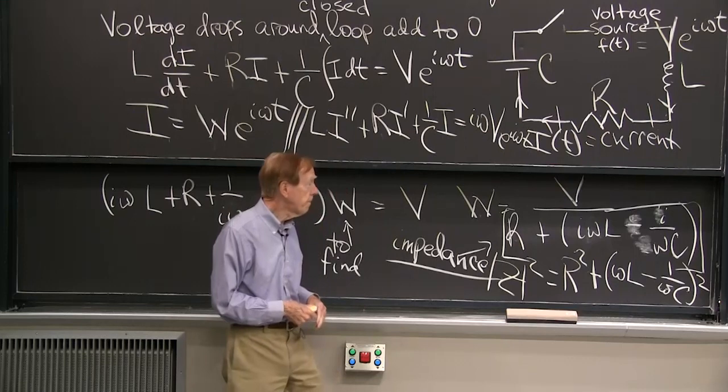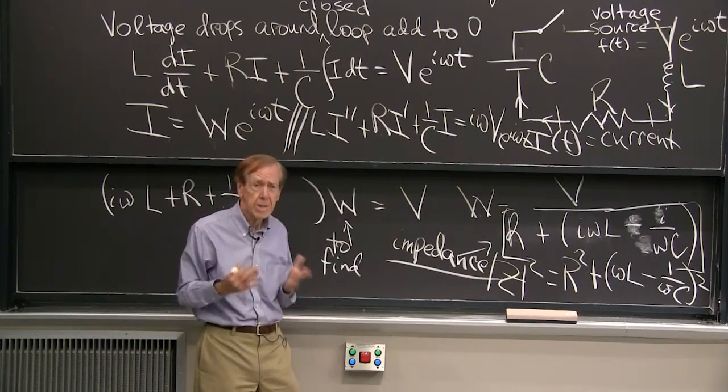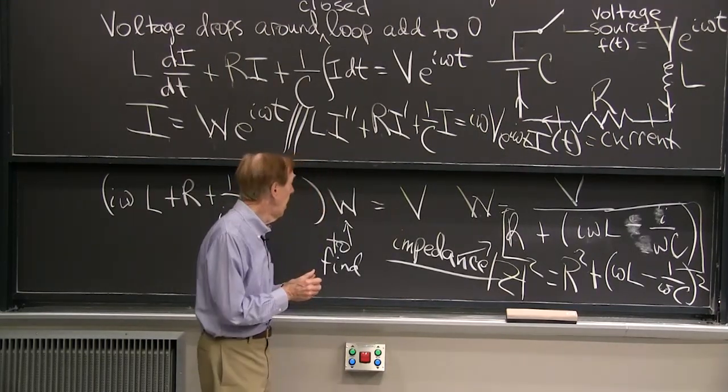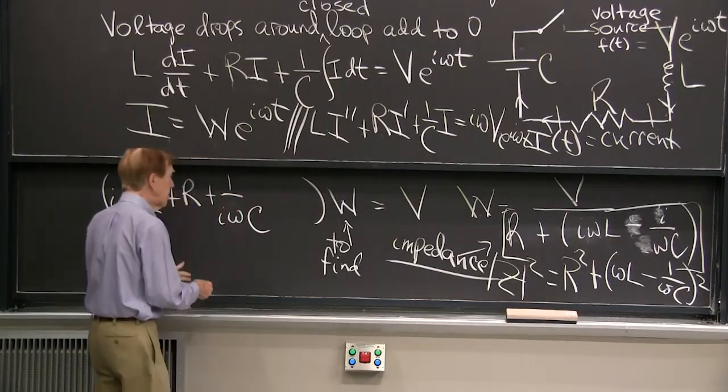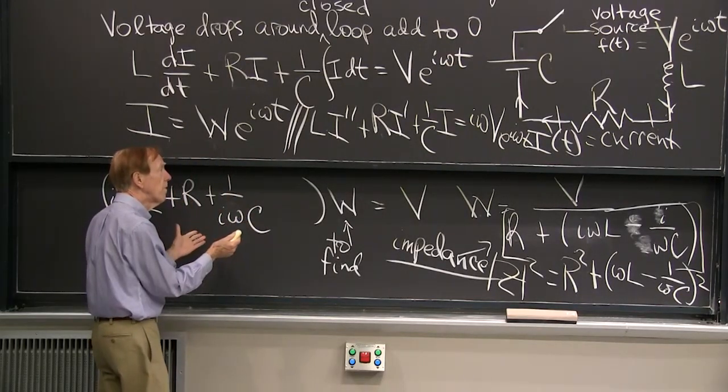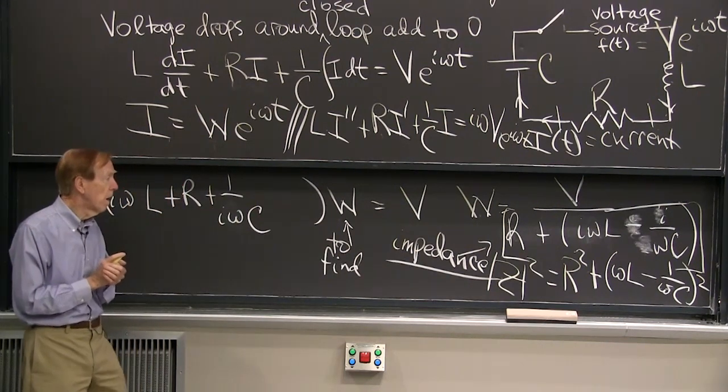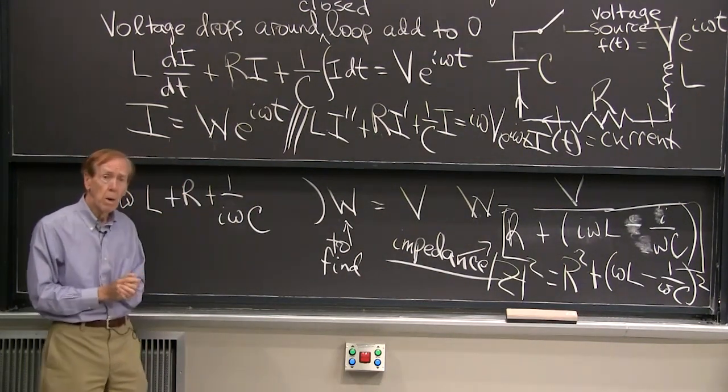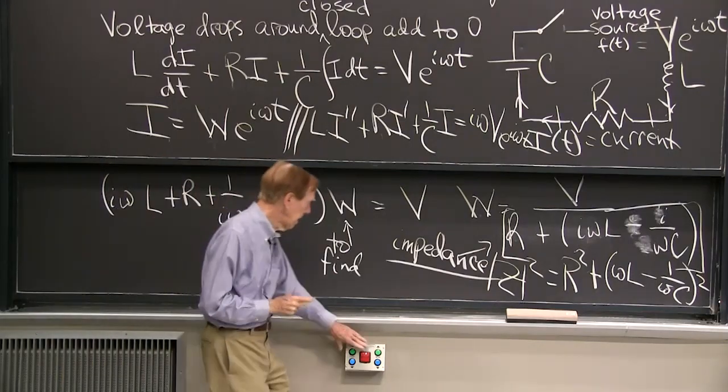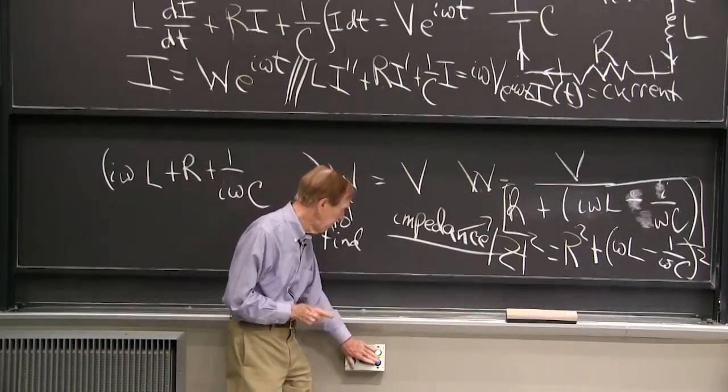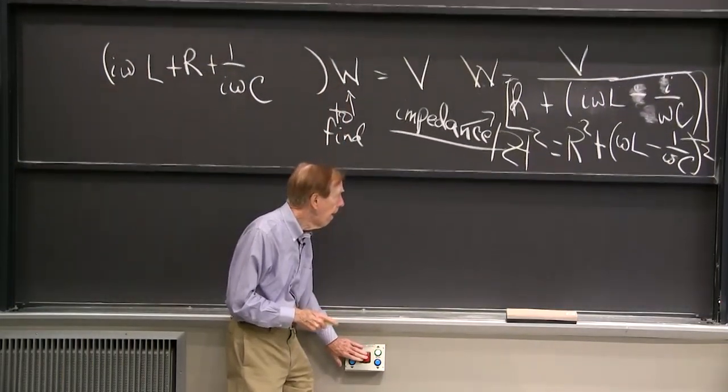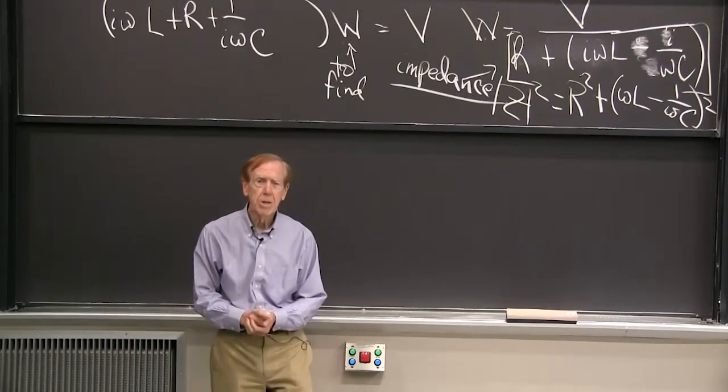So we have essentially successfully solved a second order, constant coefficient, single equation for the current. What to do now? Just let me add a little bit more. Maybe just a comment.